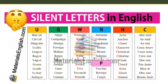Then silent P. 'Psychic' — this word starts with P but we pronounce it as 'psychic.' 'Receipt' — it's not 'receipt,' it's 'receipt.' 'Corpse' — not 'corpse,' it's 'corpse.' So P is silent here.